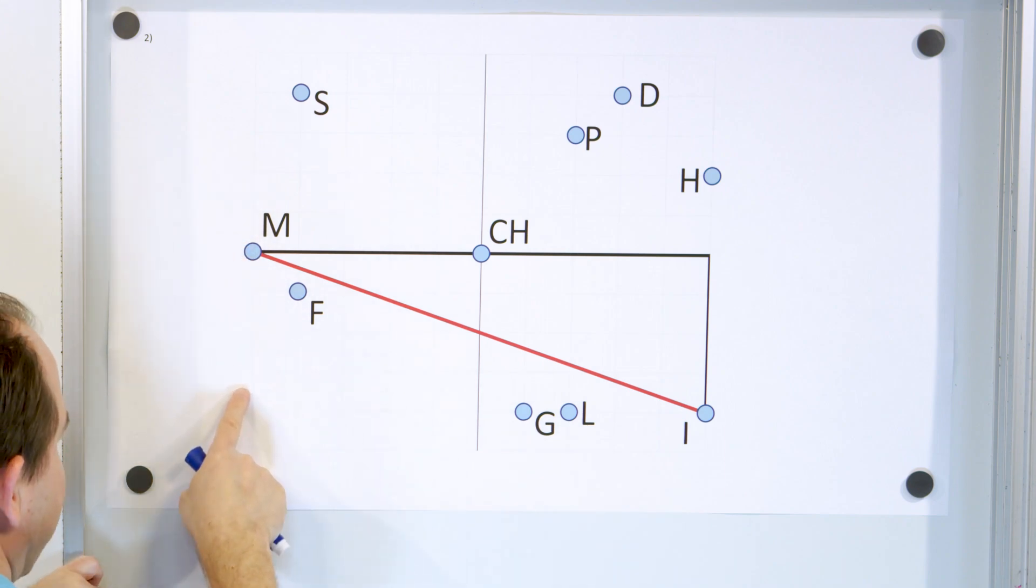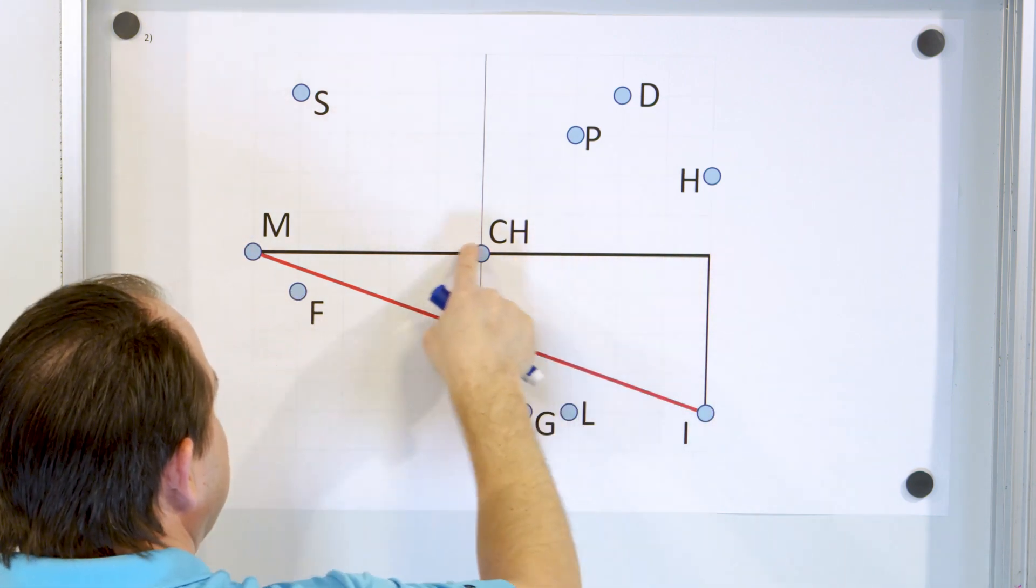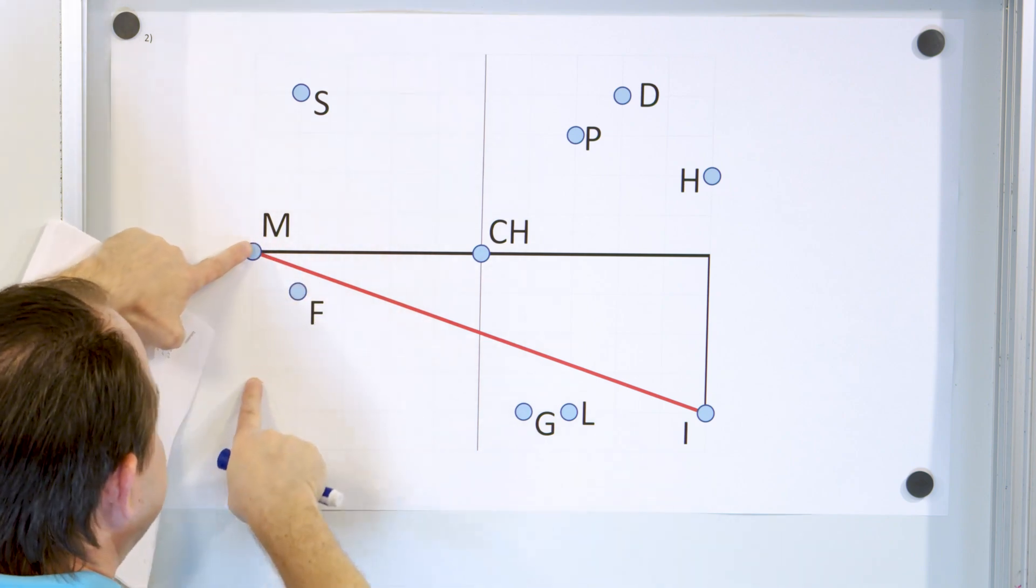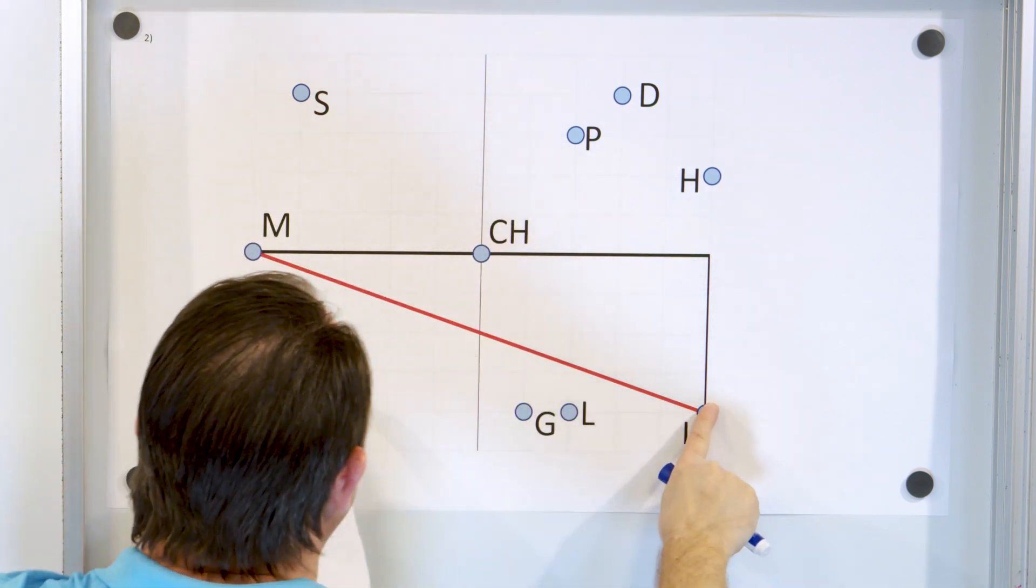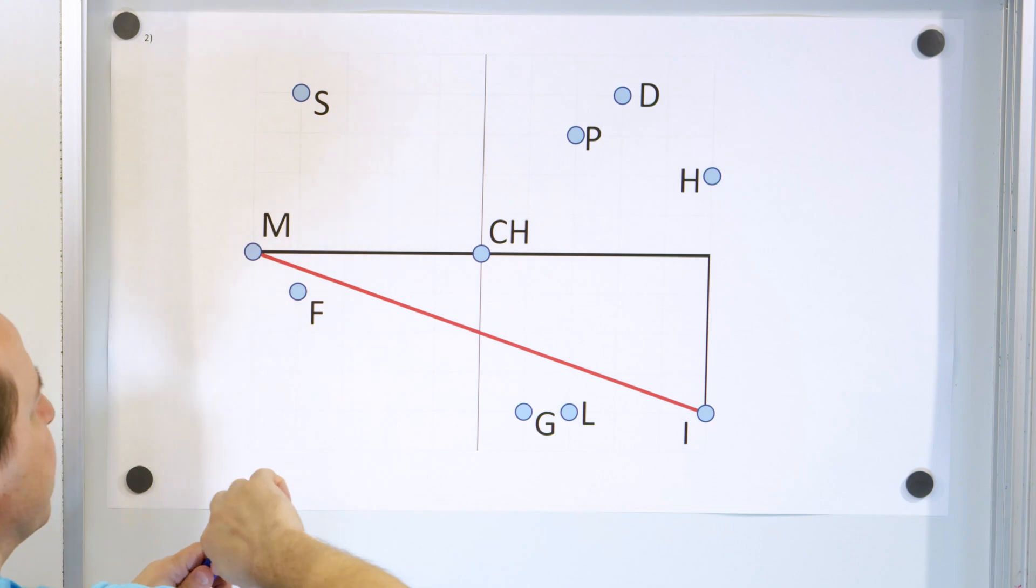Here's the straight line distance. Now we could draw a triangle down here, but it's fine to draw a triangle like this. Either way it's going to work because the distance here is the same as the distance here. So you're going to get the same answer.